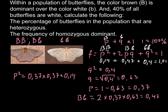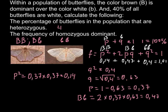Let's return to our first question: the percentage of butterflies in the population that are heterozygous. The frequency of the heterozygous is 0.47, and since 1 equals 100%, we just multiply this number by 100. So that is 47% — 47% of this population of butterflies would be heterozygous.